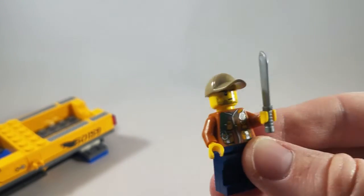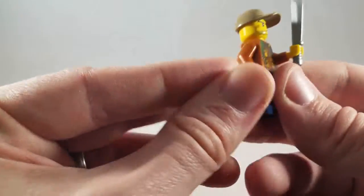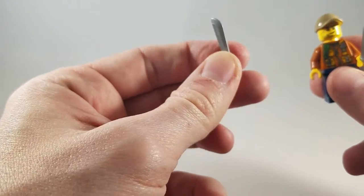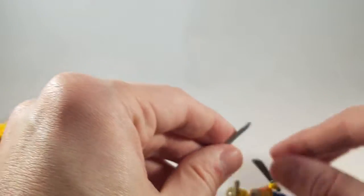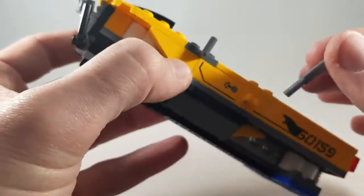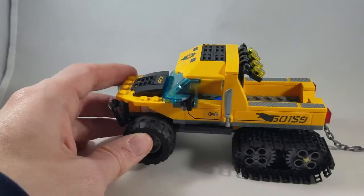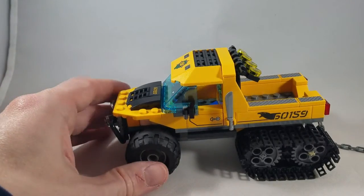The set comes with obviously a machete for him, and then you get a second machete either maybe for the female worker, or you can clip it actually to the side of the car, which I'll show you that next.